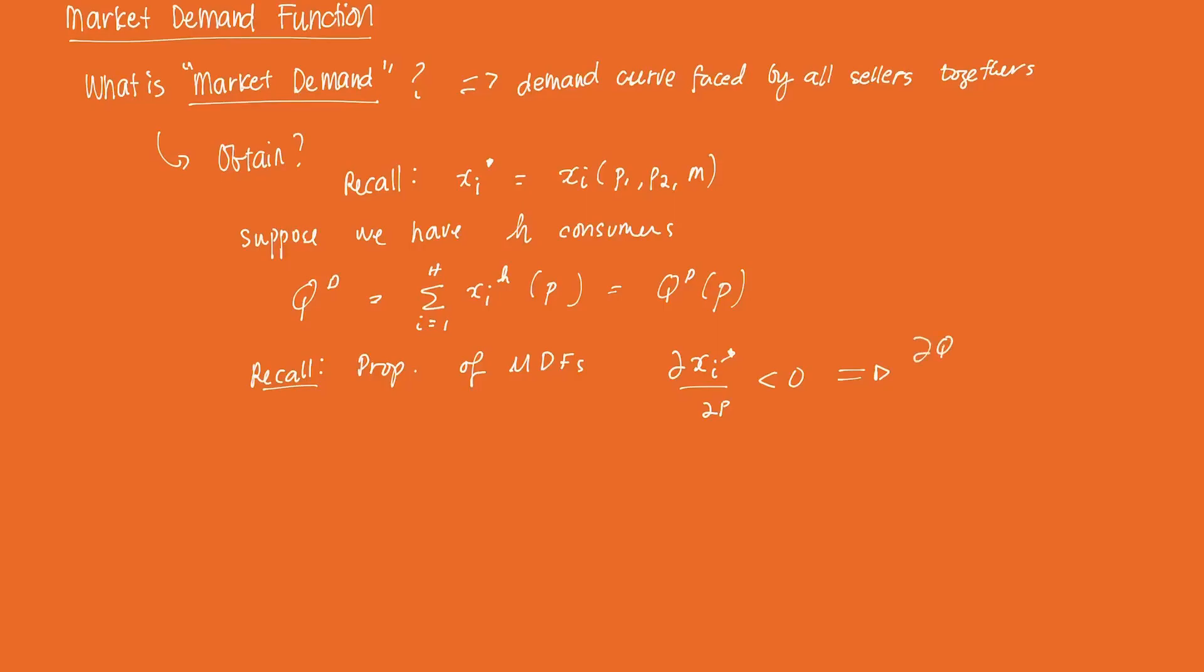So if you derive D, in this case it's just D, with respect to P, you should also expect that that would be negative because if the price of the good in the market increases, then the overall market demand is expected to decrease.